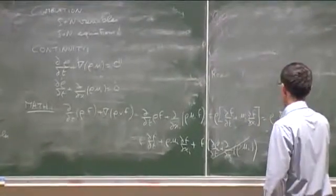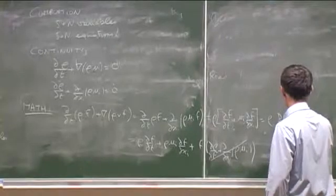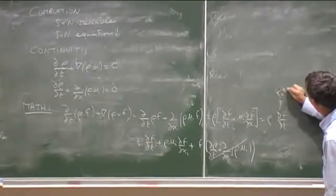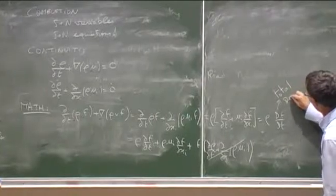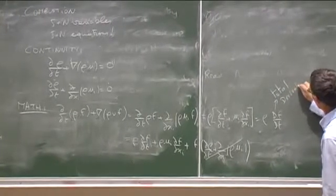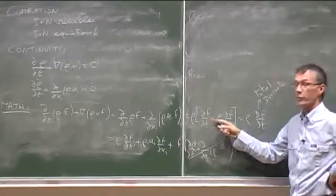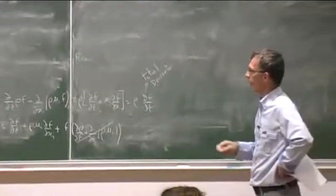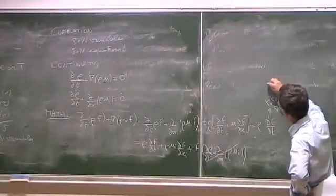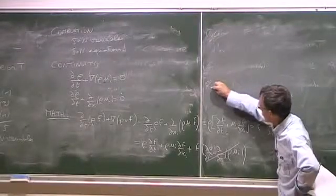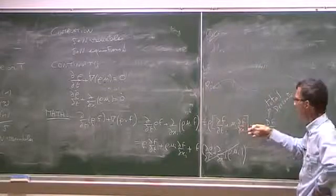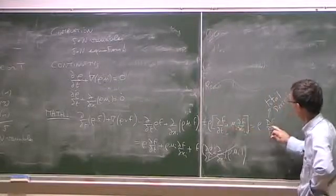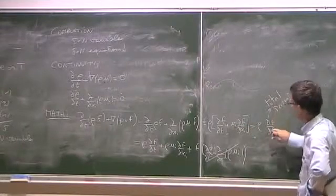Which sometimes we write also like this, df dt. Where this thing here is the total derivative, or the Lagrangian derivative. It's the variation of f when you follow the flow. You have seen that, I hope, before. If you are traveling on a fluid particle, the changes that you see is not df dt, of course. It's df dt plus the convection term. So it's what we call df dt with a big D.